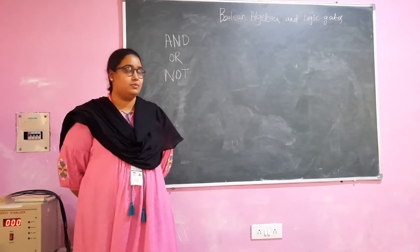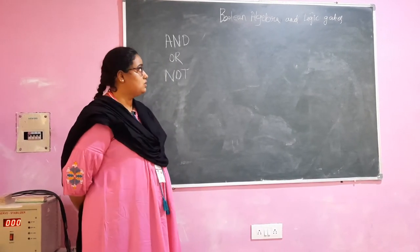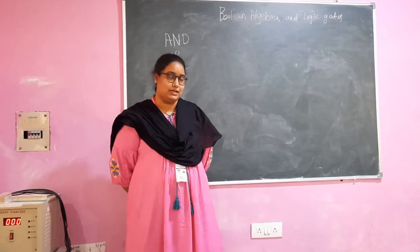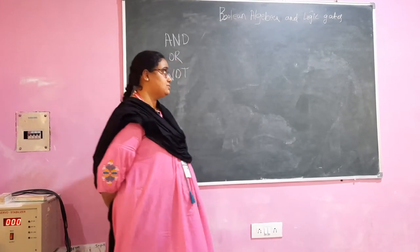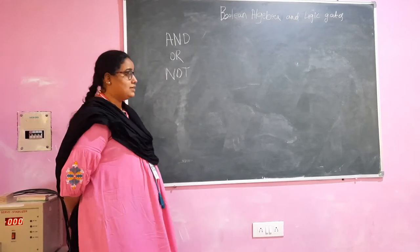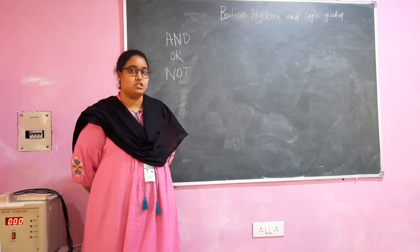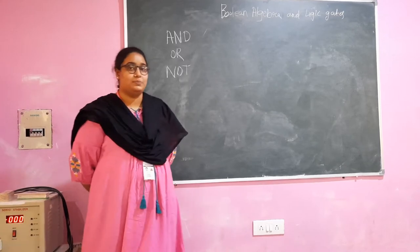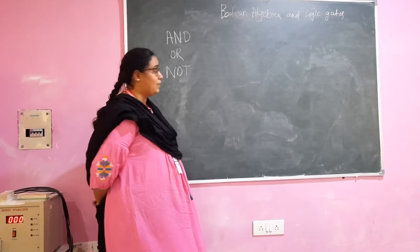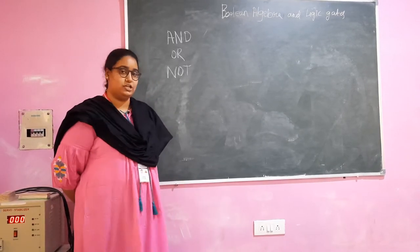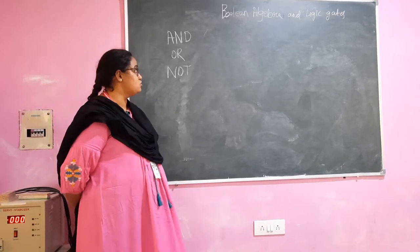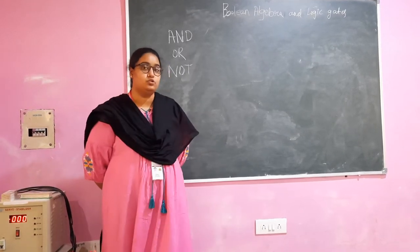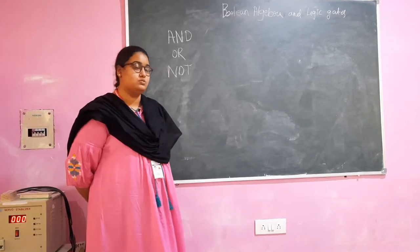Boolean algebra is a part of algebra which is used to analyze and simplify logic gates and circuits. There are three basic gates which we use: AND, OR, and NOT gate. AND gate is represented for multiplication, OR gate is used for addition, and NOT gate is used for complement. Each of these gates has its own truth table and its own symbol.